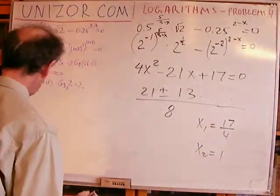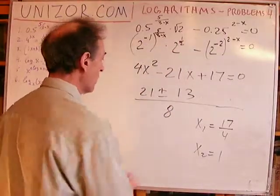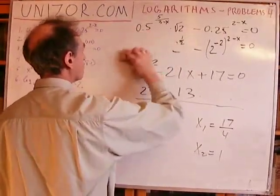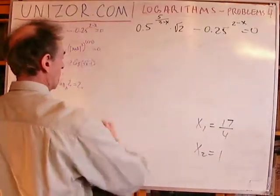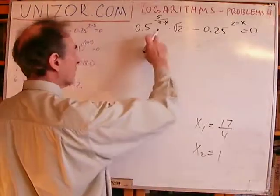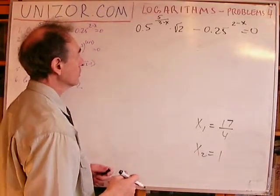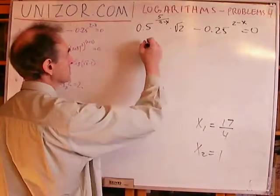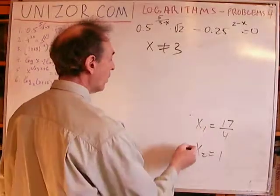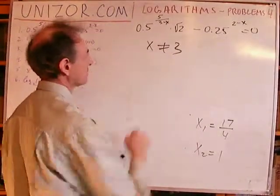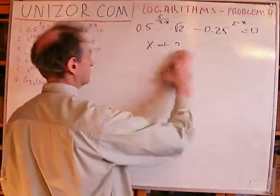So we have two solutions. What's important is to analyze these solutions against the domain of the original equation. The exponential function can have any argument, so the only restriction is x not equal to 3. Both 17/4 and 1 satisfy that condition, which means both are valid solutions to this equation.